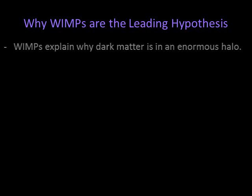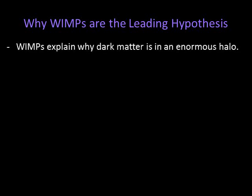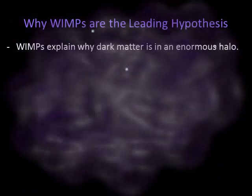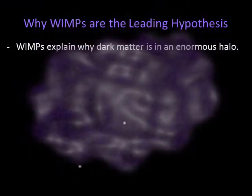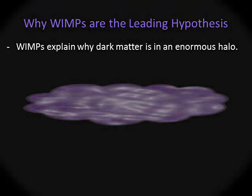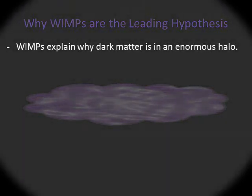Second, dark matter as WIMPs would also explain why dark matter seems to be distributed throughout spiral galaxy halos rather than concentrated in the disk. Galaxies are thought to form as gravity pulls together matter in regions of slightly enhanced density. This matter would have consisted mostly of dark matter mixed with some ordinary hydrogen and helium gas. The ordinary gas could collapse to form a rotating disk because individual gas particles could lose orbital energy. But WIMPs cannot produce photons and rarely interact and exchange energy with other particles, so as the regular gas collapsed to form a disk, WIMPs would have remained stuck in orbits far out in the galactic halo — just where most dark matter seems to be located.